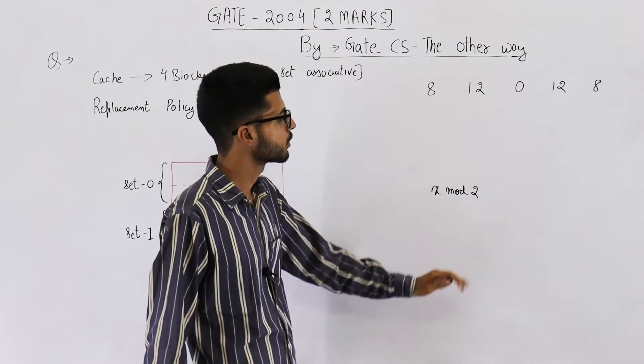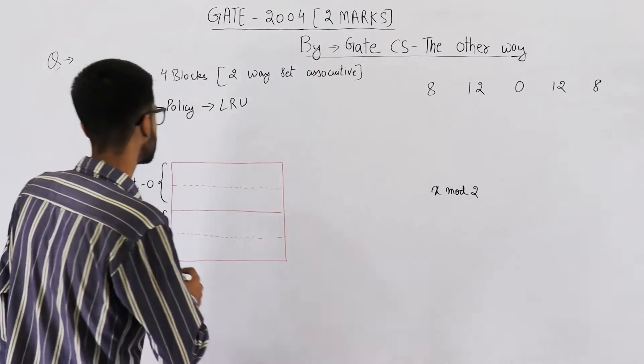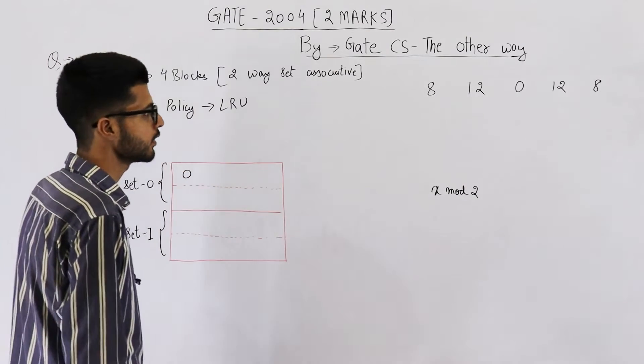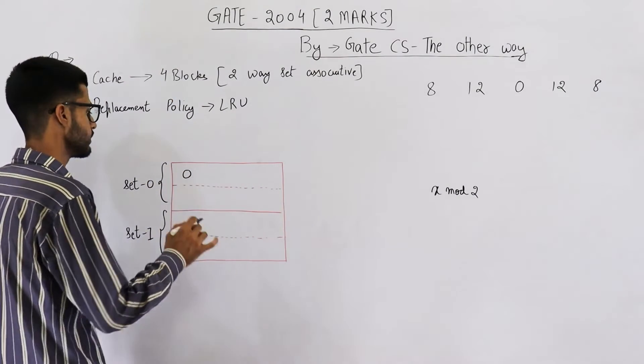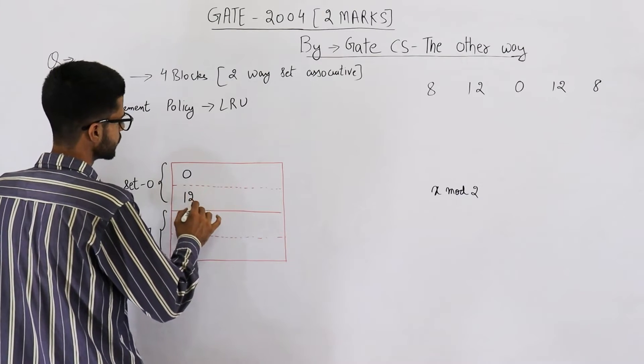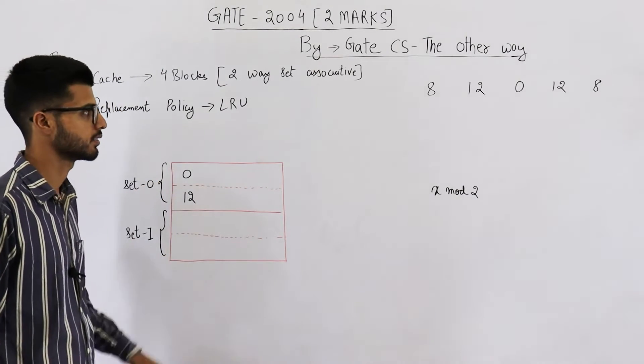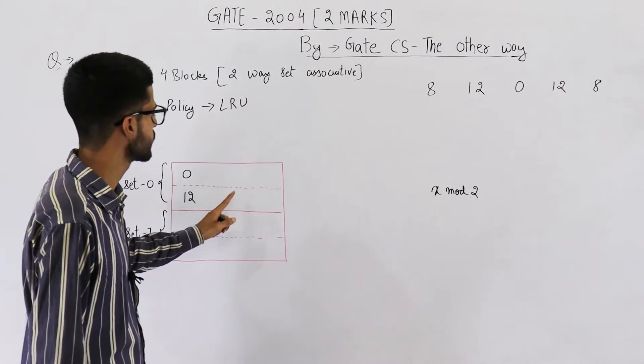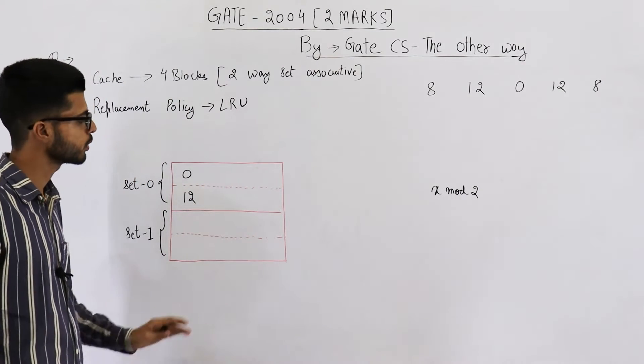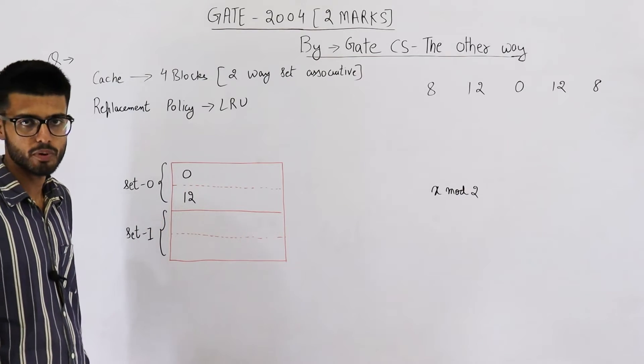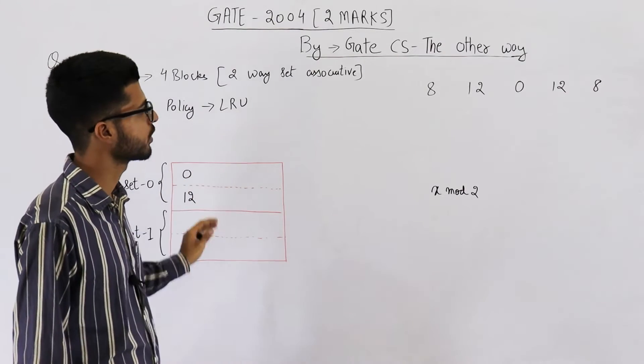Now 8 mod 2 is 0, so it will go in set number 0. Then 12 mod 2 is 0, because 12 is also even number. So that will be mapped to set 0 again. Now you see, set 0 is completely filled. That means to accommodate even one more block, we have to replace one of these two.